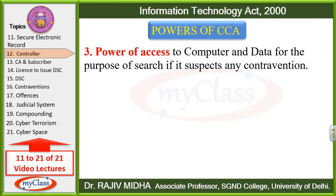Power of access to computer and data for purpose of search, if it suspects any contravention. Controller ko is baat ki power hai ki jahan par woh shak kar raha hai ki is vyakti ne ya is company ne rules, regulations ko violate kiya hai, contravene kiya hai — us case mein woh us vyakti ya company ke computer ya data ko search kar sakta hai. Is baat ki power controller ke paas hai.